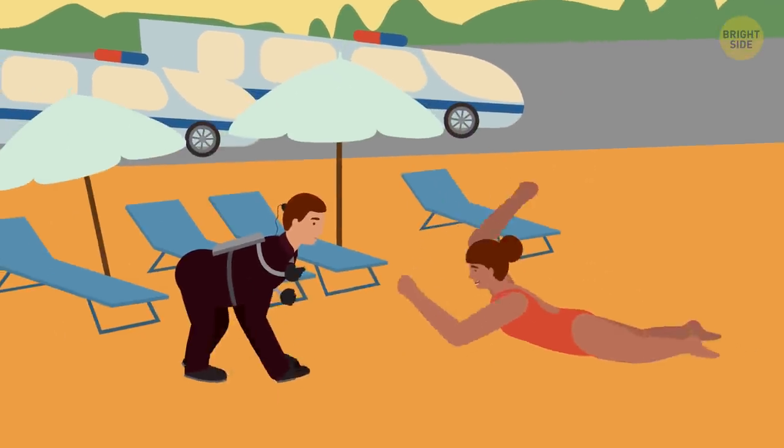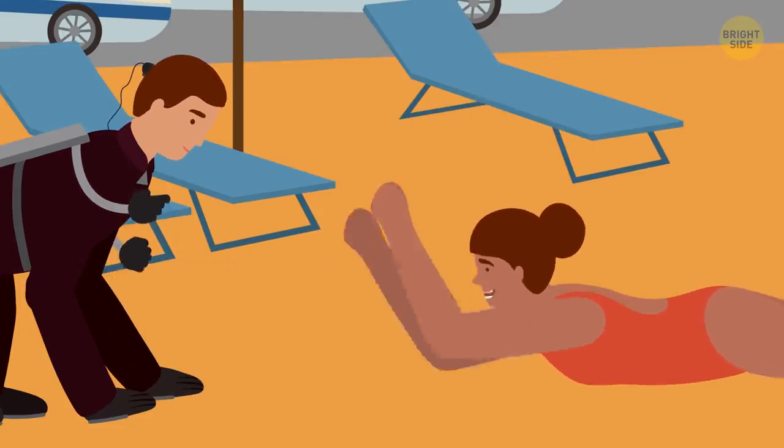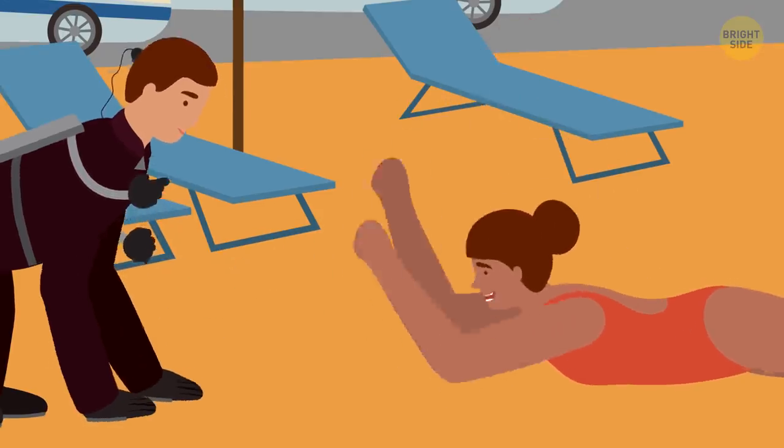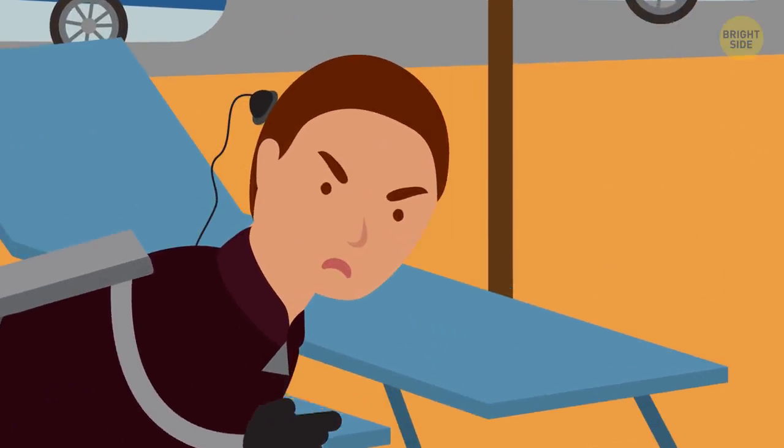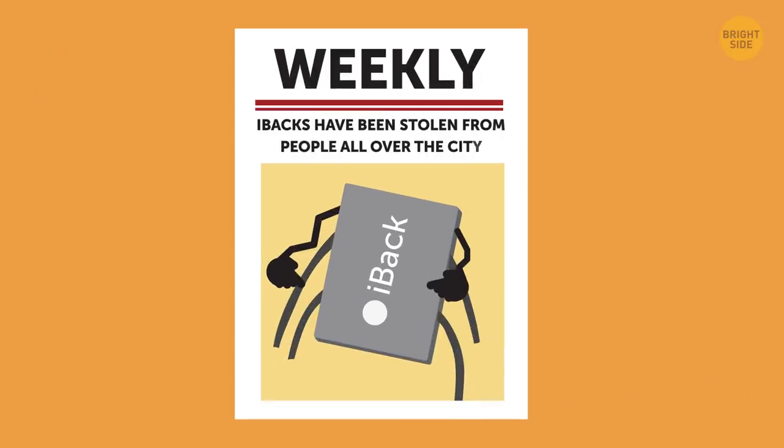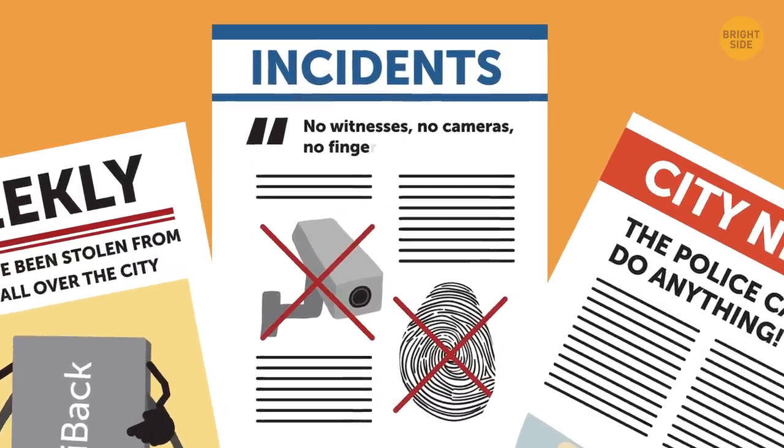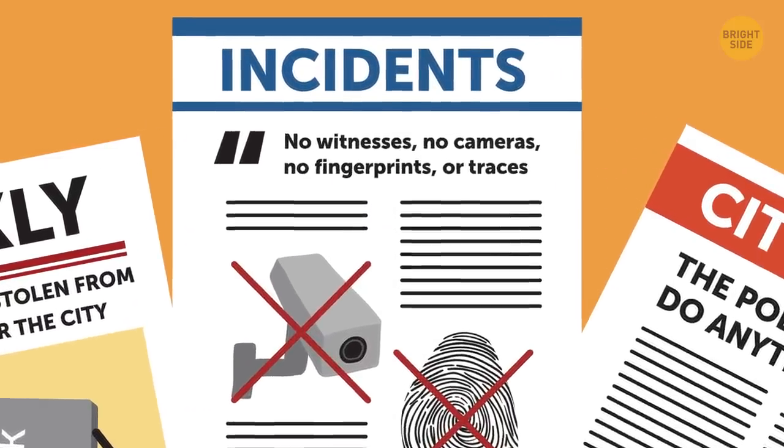Finally, our hero arrives at the beach, where someone has stolen a citizen's IBAC. What am I supposed to do now? Who would do such a thing? The woman cries. This is not the first case like this. Over the past month, IBACKs have been stolen from people all over the city. The police can't do anything. No witnesses, no cameras, no fingerprints or traces.